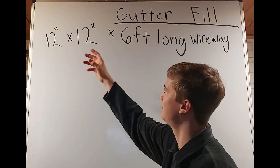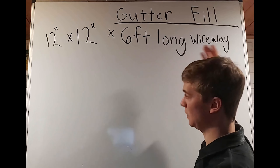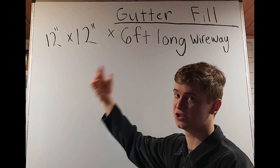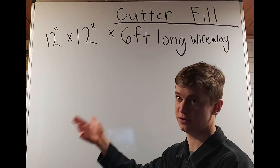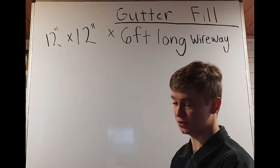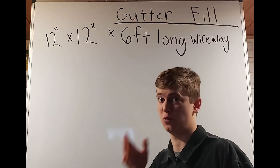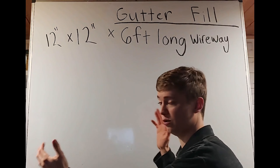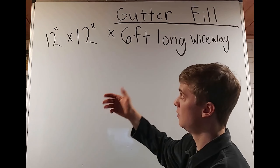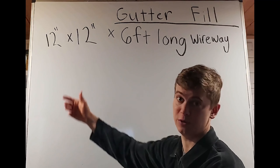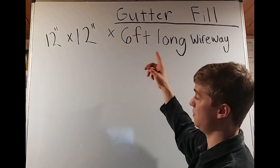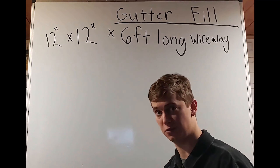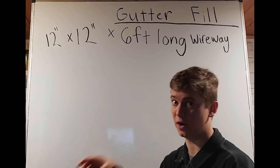First question: we have a 12-inch by 12-inch by 6-foot-long wireway. We're already working with inches, which is what we want because we're going for square inches. Just be mindful that we're working with square inches, so we only have two dimensions — we're not using how long it is, so we can eliminate the 6-foot length. We already know it's 12 by 12. If you have something that's 12 inches by 12 inches and you multiply 12 by 12, you have 144 square inches.